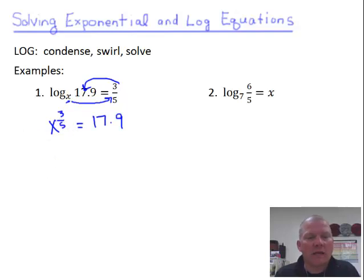And then we'll use what we just did in our other topic here a second ago. We'll raise each side to the reciprocal of 3/5ths. The reciprocal of 3/5ths is 5/3rds. So those cancel. I've got to raise this one to the 5/3rds, the 17.9 also.